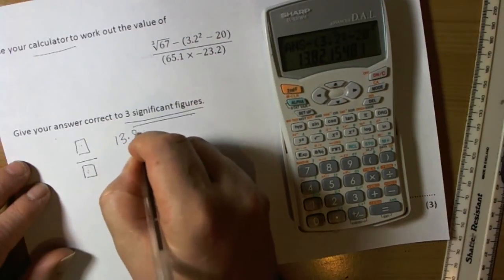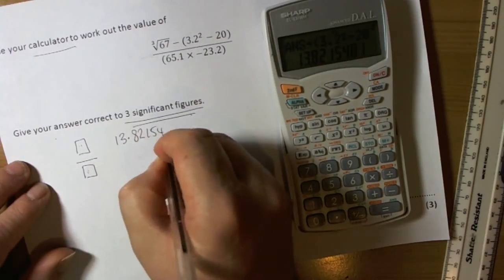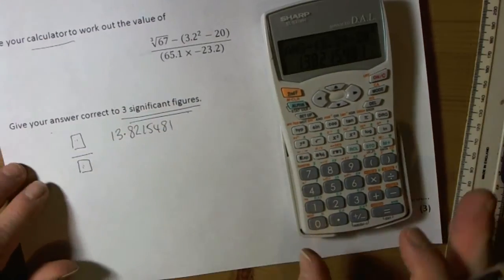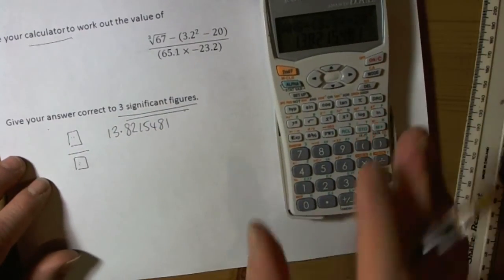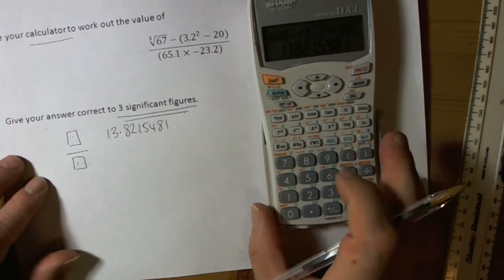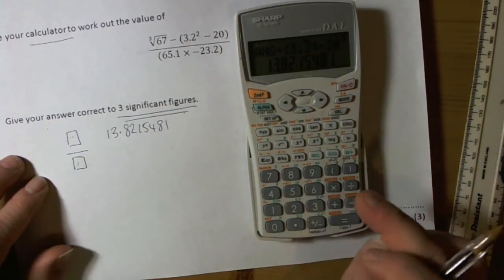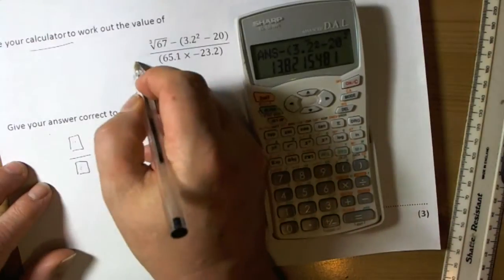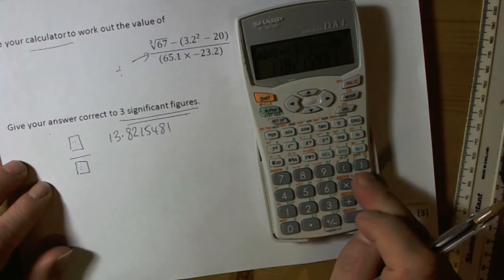Always write down parts of the question that you do because it's method, just in case you press something wrong at the end. At least you get a method mark. I'm going to leave that in there, of course, because I can now press divide, because that symbol does mean divide.